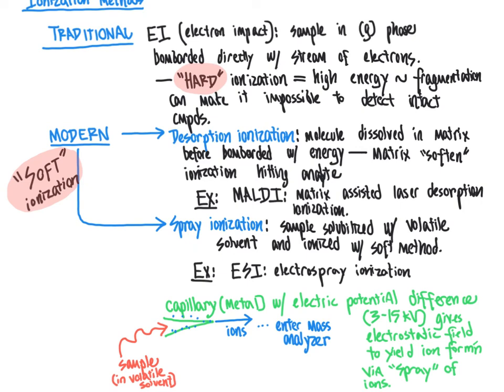In the next video, we're going to look at how, once a compound has been ionized through either the traditional method or one of these modern methods, we go about analyzing the mass-to-charge ratio — how we separate ions based on their mass-to-charge ratio to evaluate the identity of the compounds we're looking at.